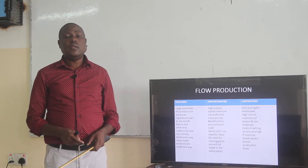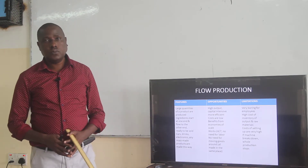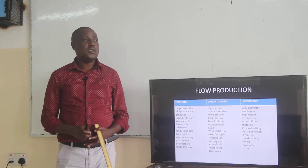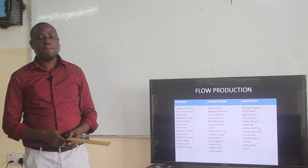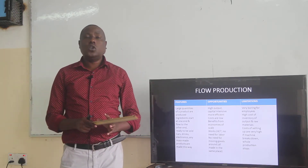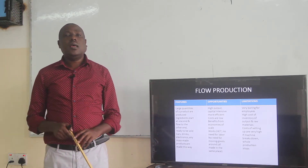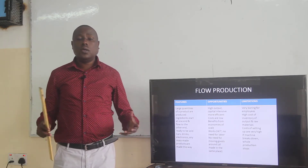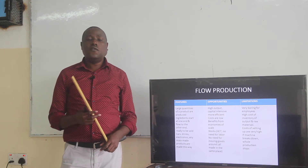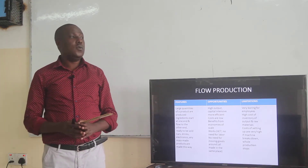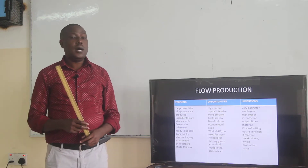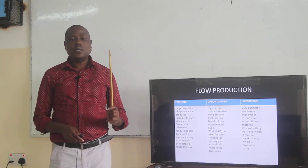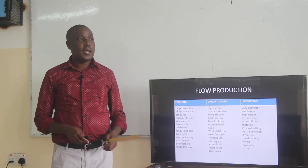The advantages of flow production are high output and being capital-intensive, meaning it is more efficient and reduces the cost of labor. You benefit from economies of scale because we are producing in mass. It can work 24/7 — the whole day, the whole week, the whole month. There is no need for much labor because we are mostly using machines or capital goods. Moving goods around also costs less.